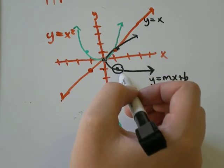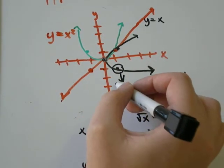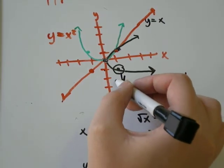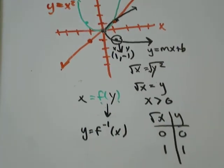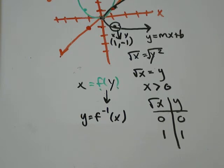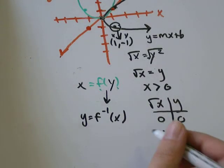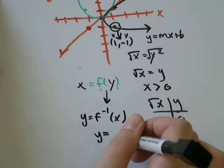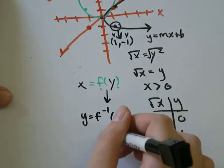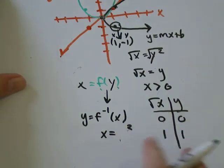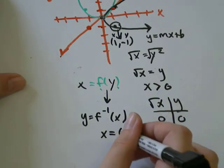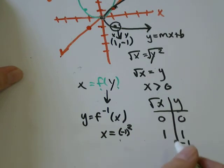What about this point? That point is at one, negative one. The x is at one, the y is negative one. So, how does that fit in with our graph? We had x equals y squared. Well, isn't negative one squared also equal to one? Yes.